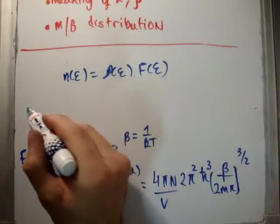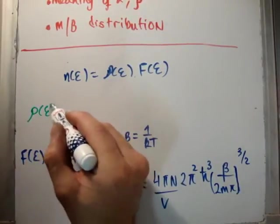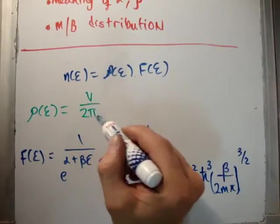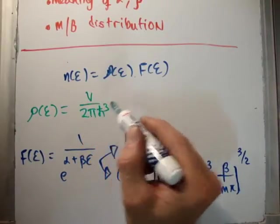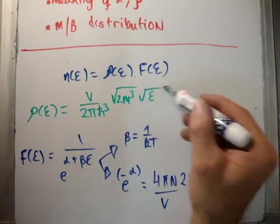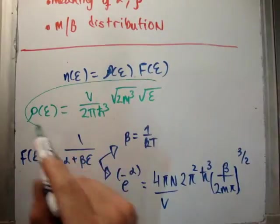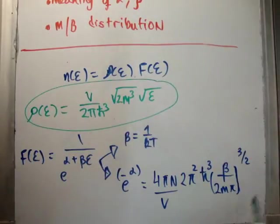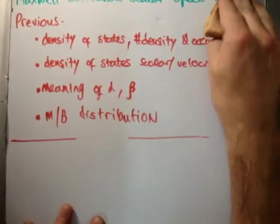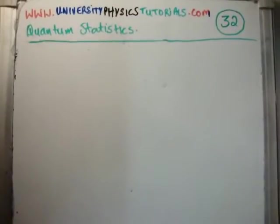So where do we start? Well, the density of states in energy space, the one that I showed, anyway, was the volume divided by twice pi h bar cubed square root epsilon. So, what I am going to put in is this multiplied by all of this together, and I am going to get the number density, or the number density in energy space, or the number of particles with energy epsilon.